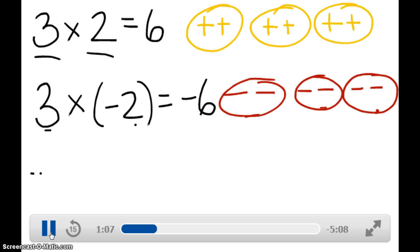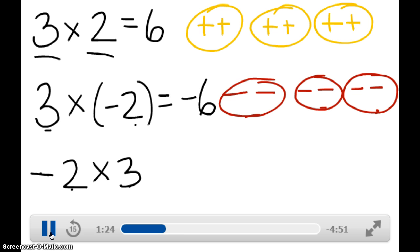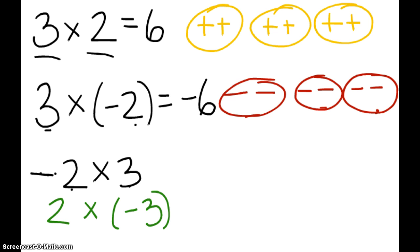What if I reversed it and said negative 2 times 3? That is negative 2 groups of positive 3. Can you have negative 2 groups of something? No. So really what this means is: negative 2 groups of 3 is the same thing as 2 groups of negative 3. Since you cannot have negative 2 groups of something, you're going to do the opposite — 2 groups of negative 3. So I've got negative 3; there's one group.